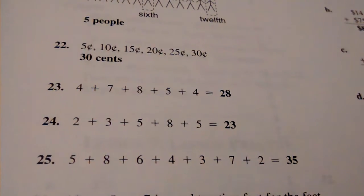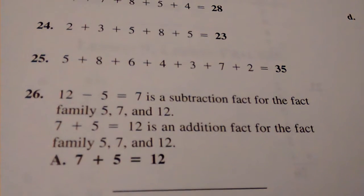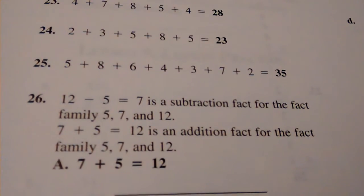Number 25, 35. Number 26, A: 7 plus 5 equals 12.